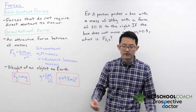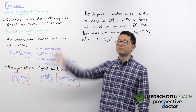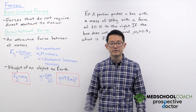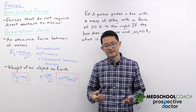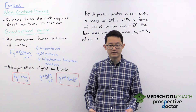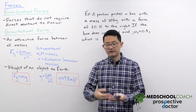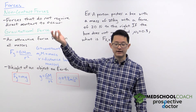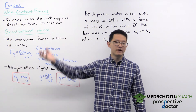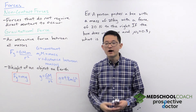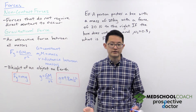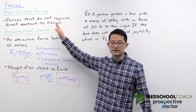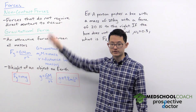If you throw an object up into the air, it's going to fall down because it's experiencing the force of gravity. When your ball is in the air and experiencing gravity, it's not in direct contact with anything — hence, non-contact force.